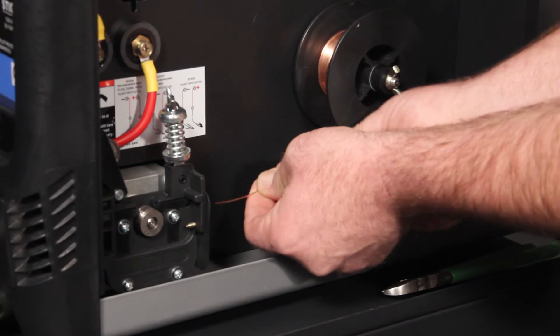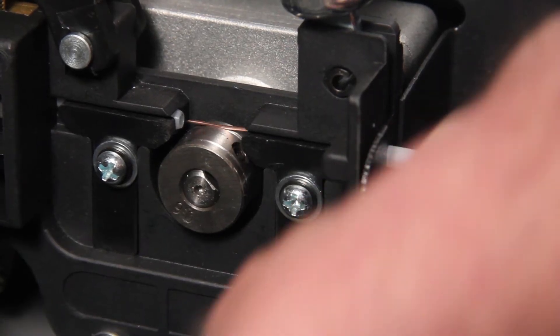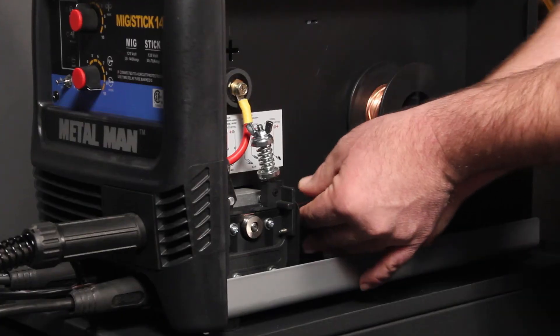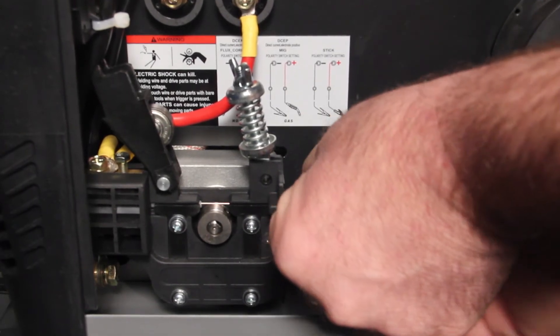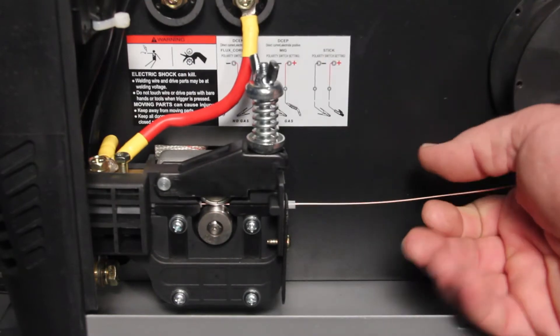Open the drive roll pressure arm. Feed the wire into the inlet guide, over the drive roll, and into the next inlet guide. Feed in about three to four inches of wire into the MIG torch. While still holding tension on the wire, close the drive roll pressure arm and flip up the tension adjustment.